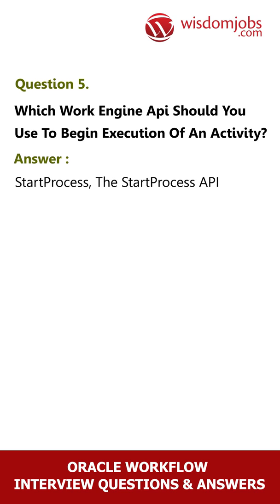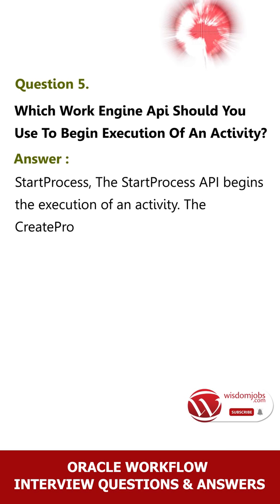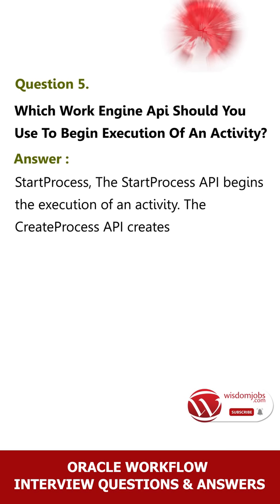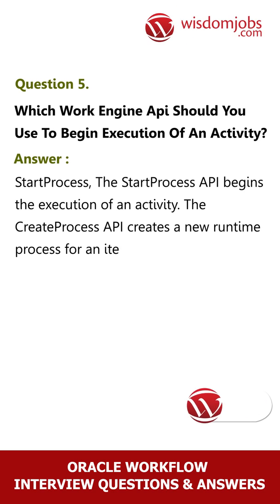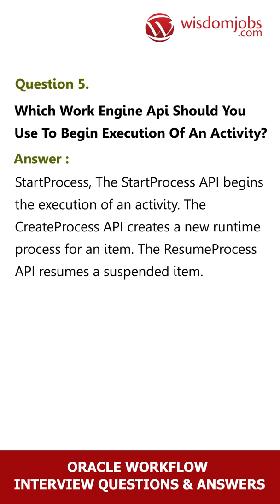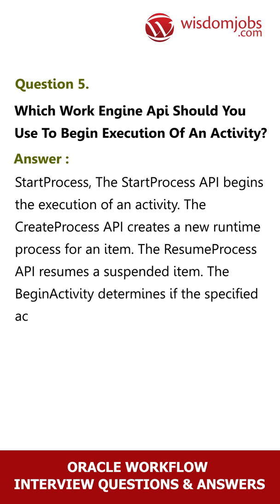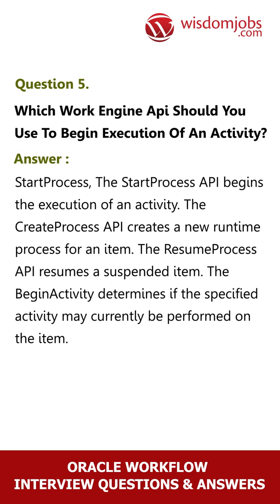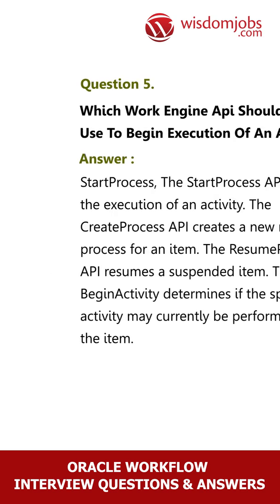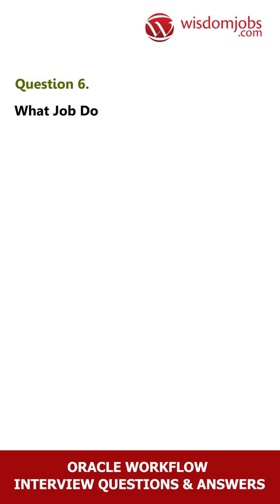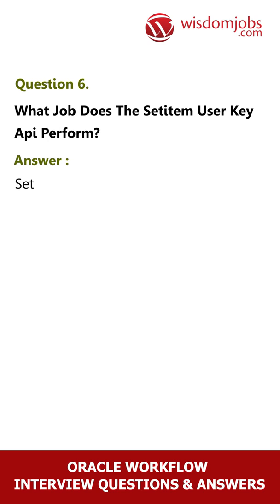Question 5: Which Workflow Engine API should you use to begin execution of an activity? Answer: Start Process. The Start Process API begins the execution of an activity. The Create Process API creates a new runtime process for an item. The Resume Process API resumes a suspended item. The Begin Activity API determines if the specified activity may currently be performed on the item.